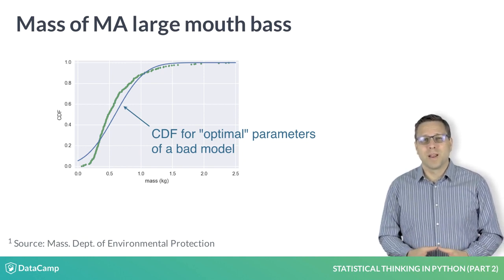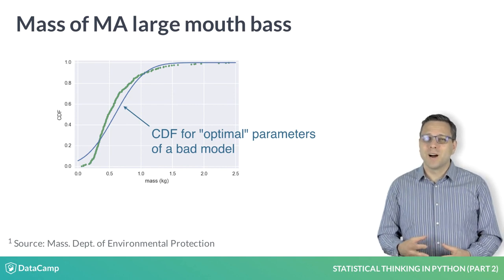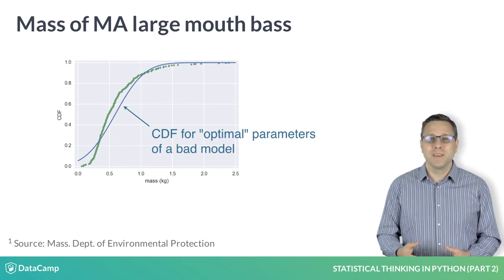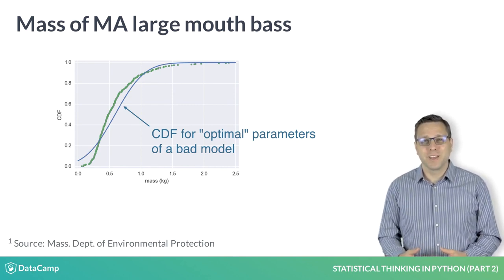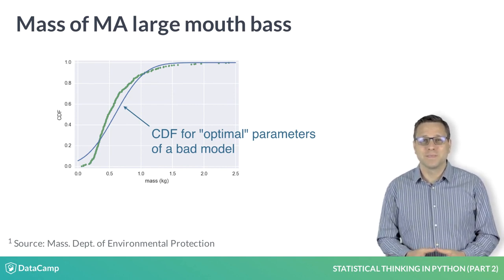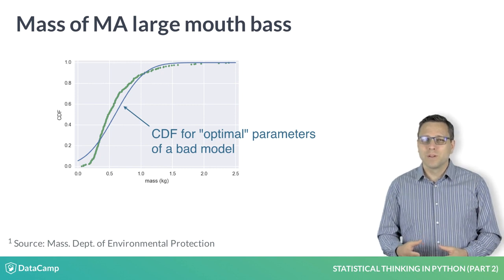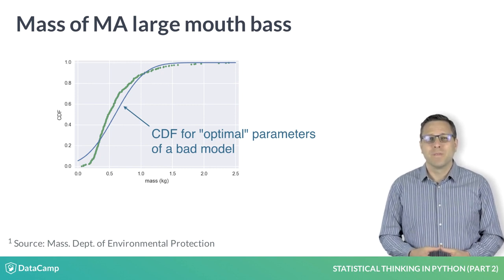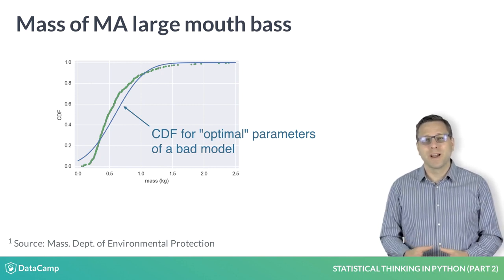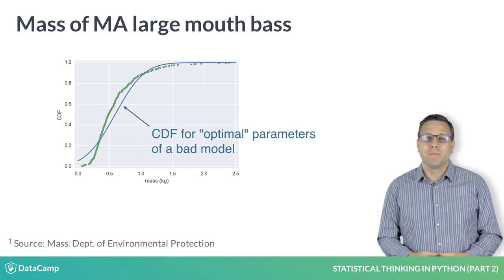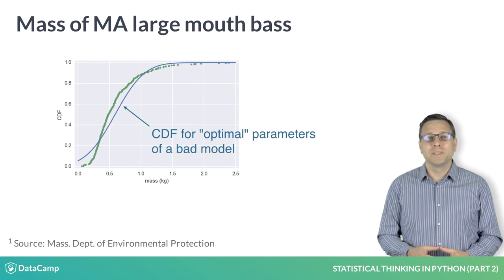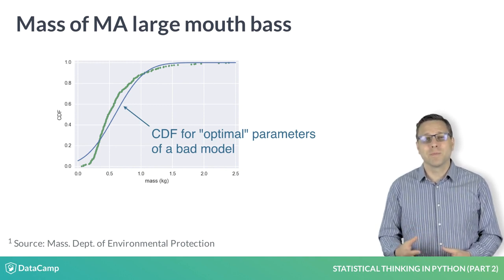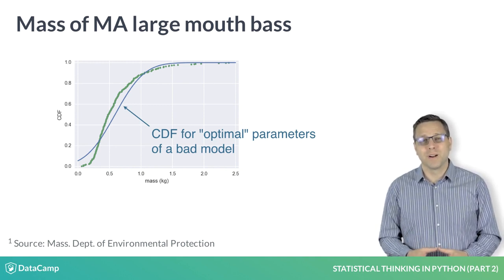Finding the optimal parameters is not always as easy as just computing the mean and standard deviation from the data. We will encounter this later in this chapter when we do linear regressions, and we rely on built-in numpy functions to find the optimal parameters for us.